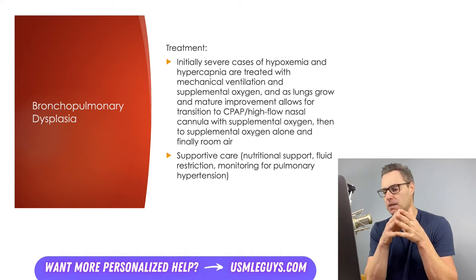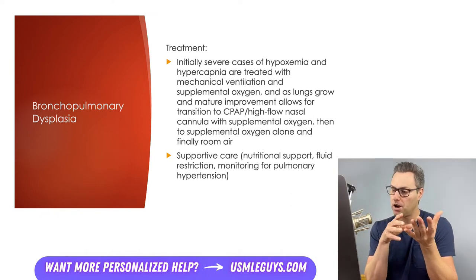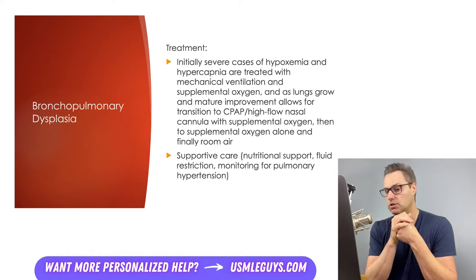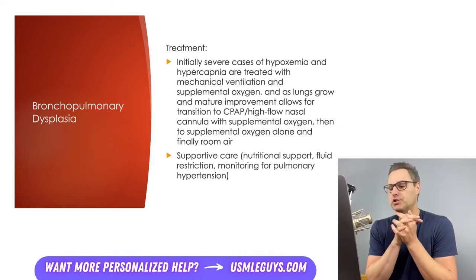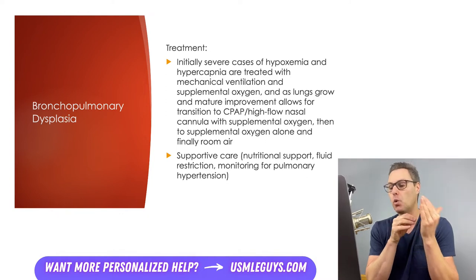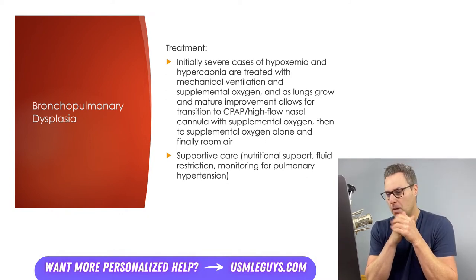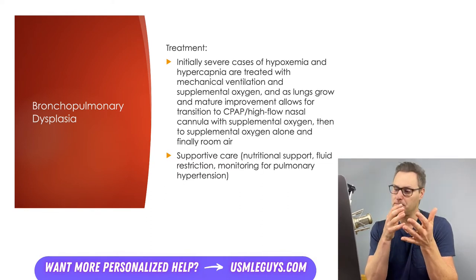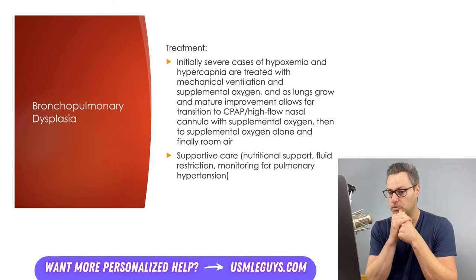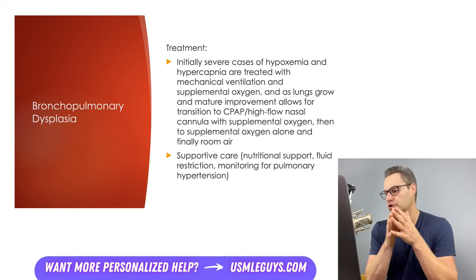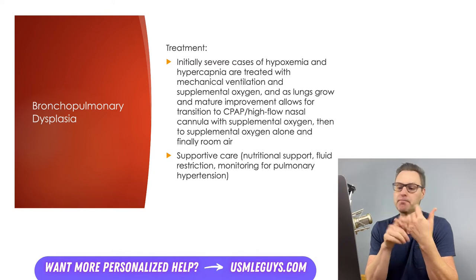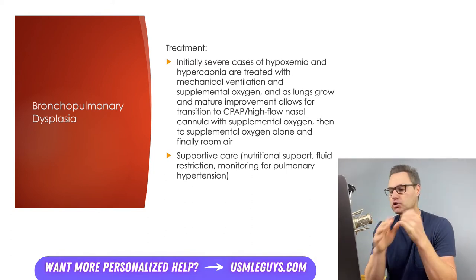For preterm infants, pulse ox is maintained between 90% and 95% to both treat hypoxemia but also to limit exposure to excessive oxygen, which can cause oxygen toxicity — that can lead to retinopathy of prematurity, which we'll discuss shortly. Once the neonate reaches term age, the pulse ox parameters can be increased to 100%. Patients with less severe disease may only need CPAP and improve to no longer requiring respiratory support. Supportive care is also extremely important, as lung growth and maturity depends on adequate nutrition. Fluid intake is carefully monitored to avoid pulmonary edema, and due to structural changes seen in bronchopulmonary dysplasia, the risk of pulmonary hypertension is elevated, so patients are monitored for this complication.